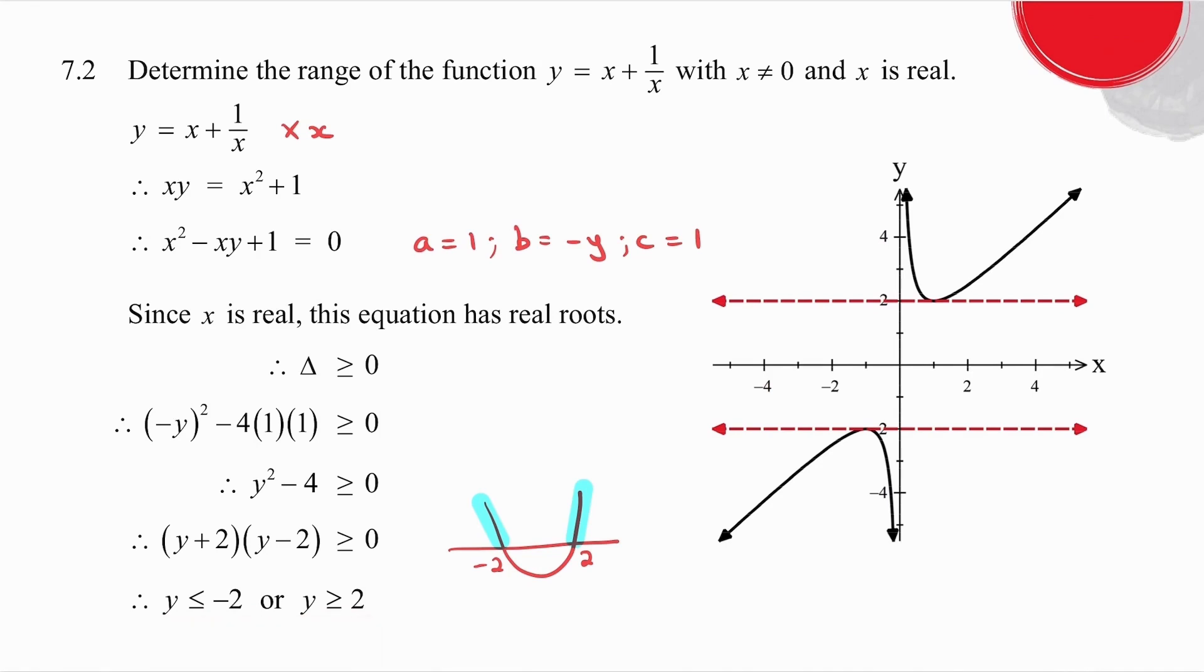Because remember, range means possible y values. Now it might be of interest to see, if I were to draw this graph, it looks like that and that. Now you're not expected to be able to draw this. But just to show you what's happening with it, the graph never exists between minus 2 and 2. So the graph only exists less than or equal to minus 2 or greater than or equal to 2.